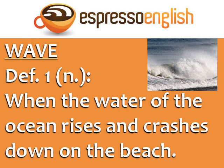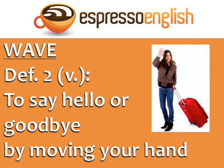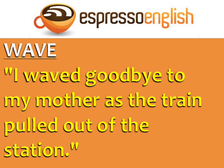Wave. Definition 1: Noun – when the water of the ocean rises and crashes down on the beach. Example: The waves at this beach are pretty big. They can knock you down if you're not careful. Definition 2: Verb – to say hello or good-bye by moving your hand. Example: I waved good-bye to my mother as the train pulled out of the station.